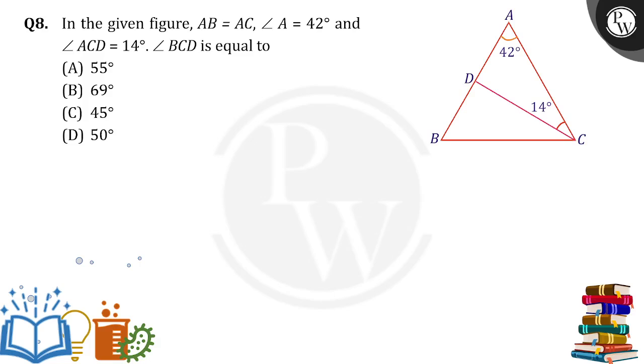Hello everyone. In the given figure, AB is equal to AC, angle A equals 42 degrees, and angle ACD is equal to how much? ACD means this angle we can calculate.